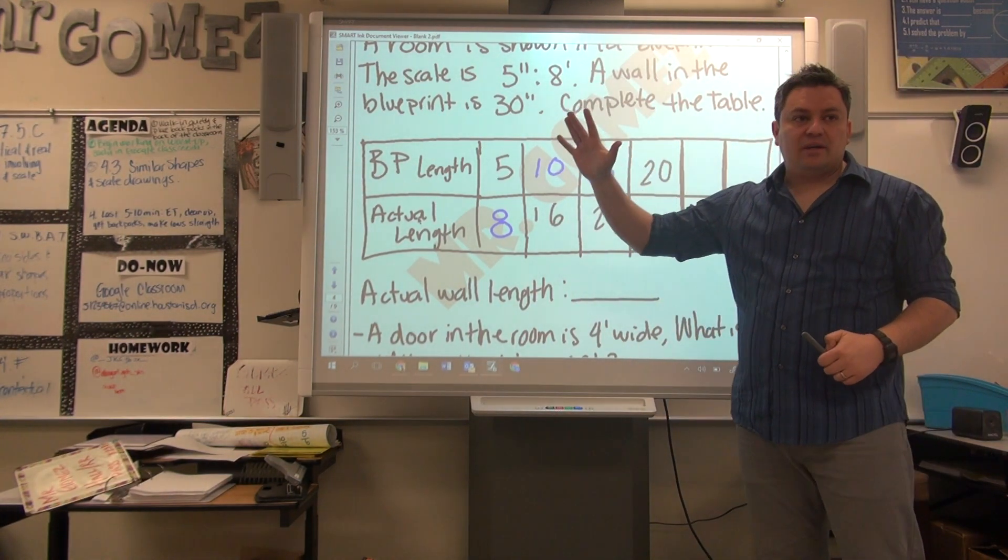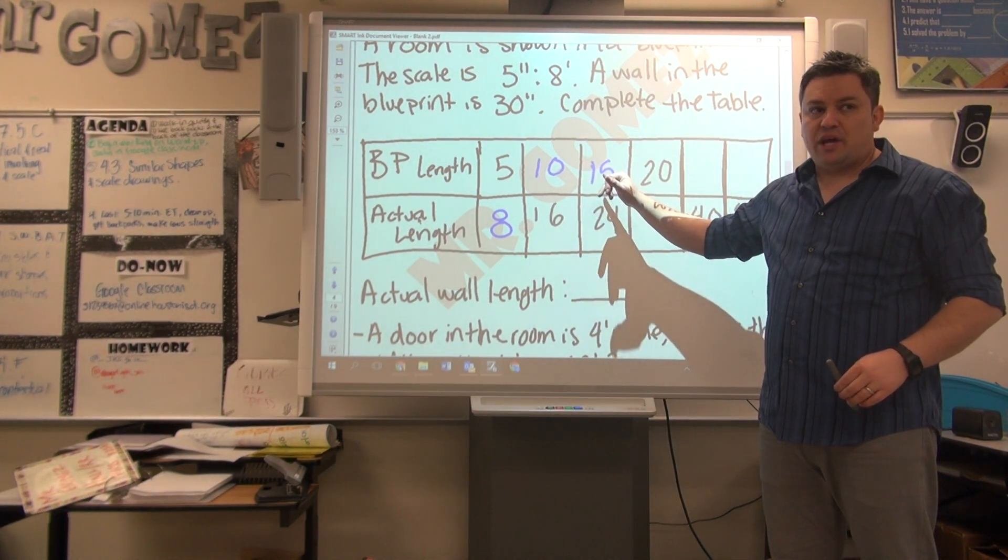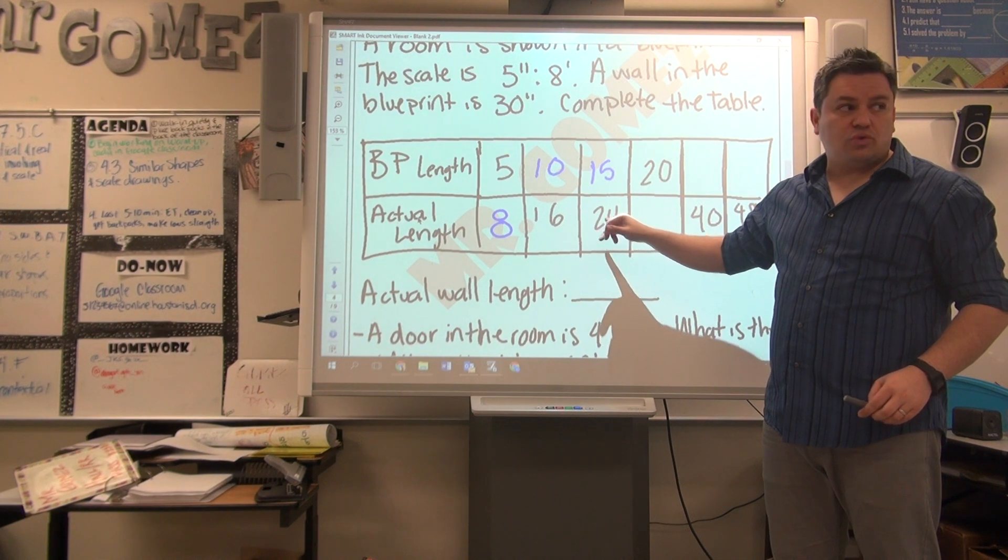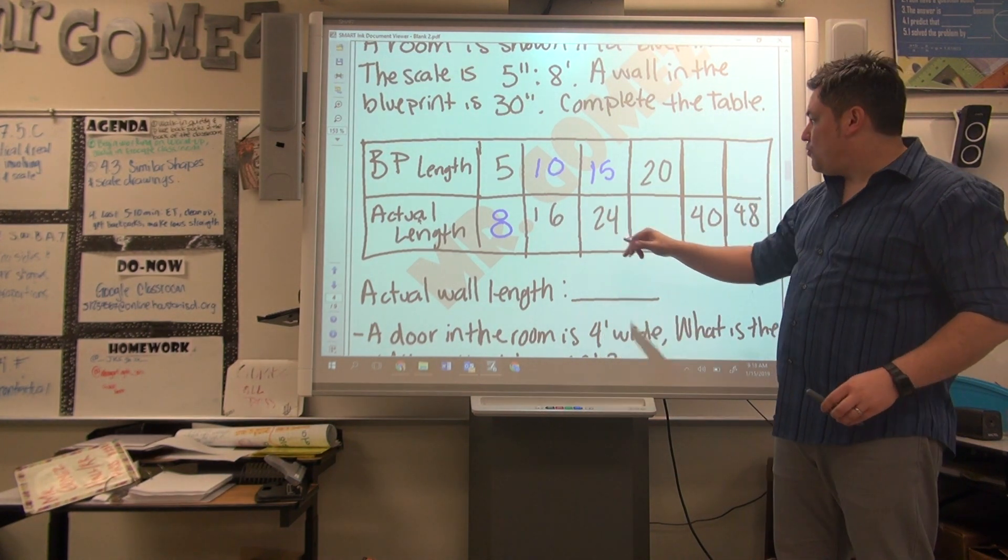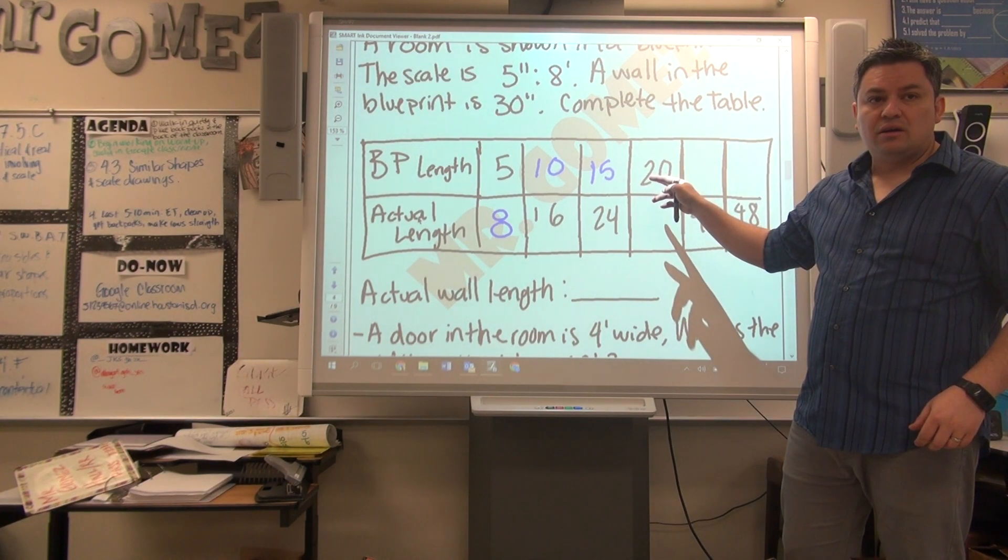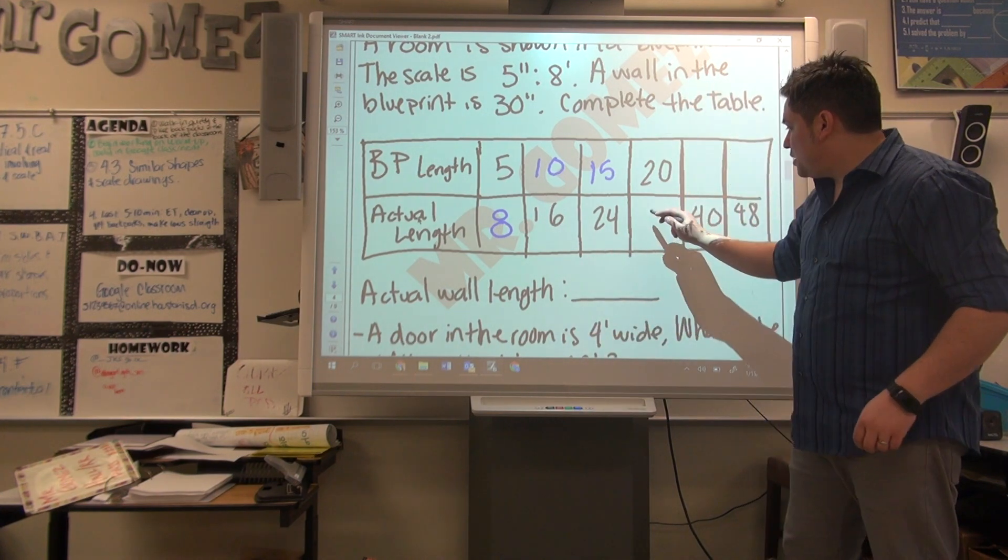So for every 5, how many sets of 5 do you have in here? 3 times 8 is 24. So how many sets of 5 do you have on 20? 4 times 8 is 32.